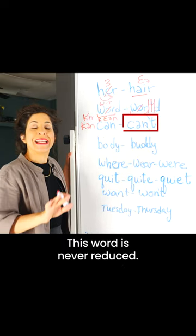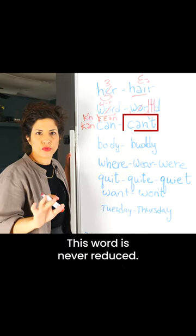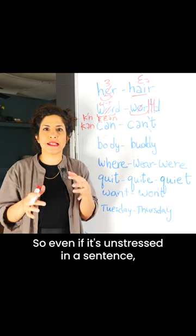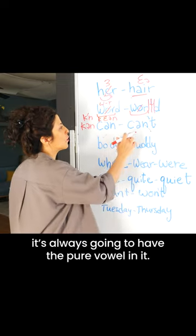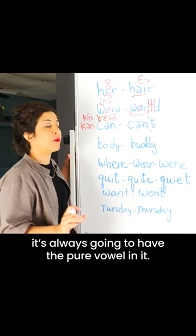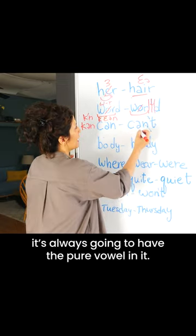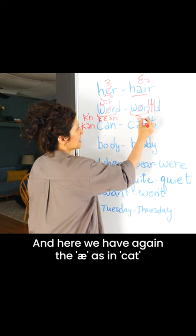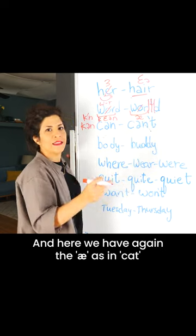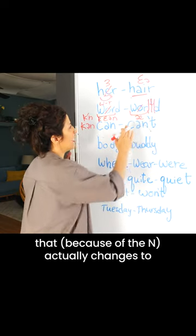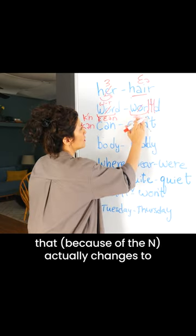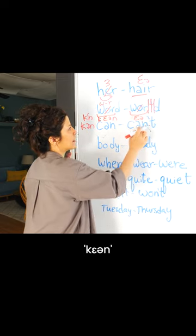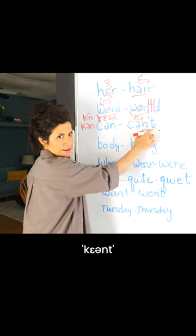This word is never reduced. So even if it's unstressed in a sentence, it's always going to have the pure vowel in it. And here we have again the 'a' as in 'cat,' that because of the N actually changes to 'can't.'